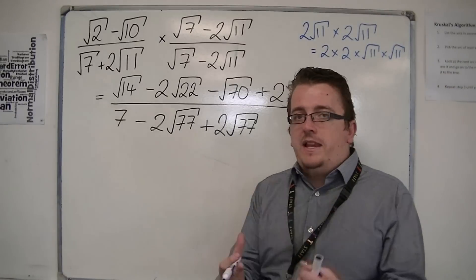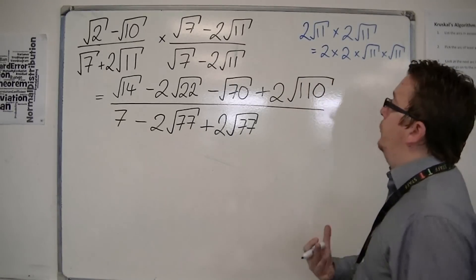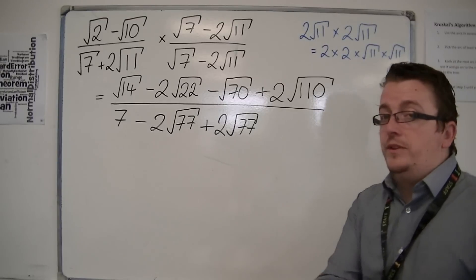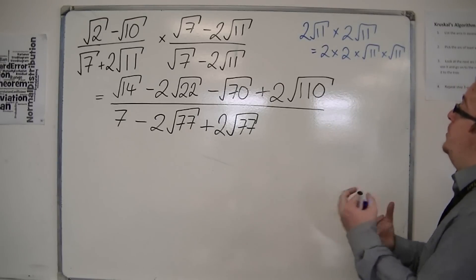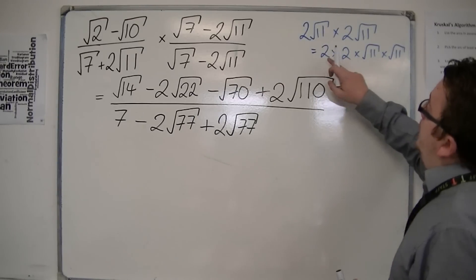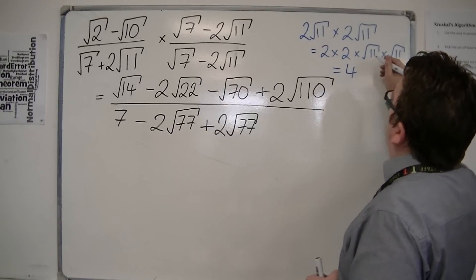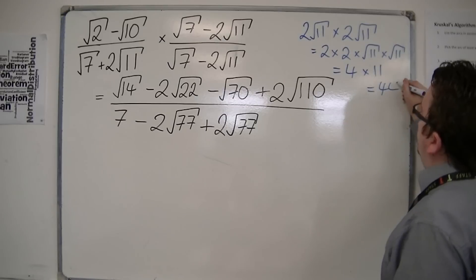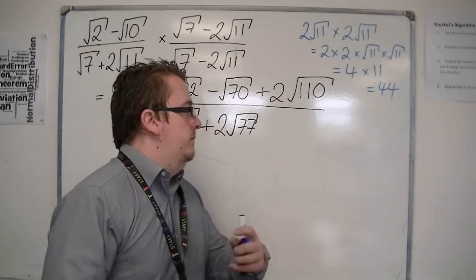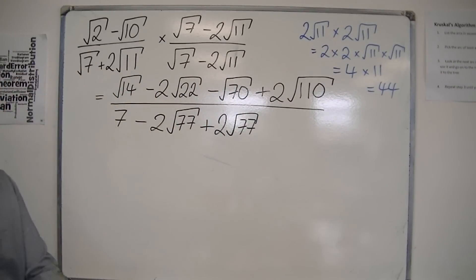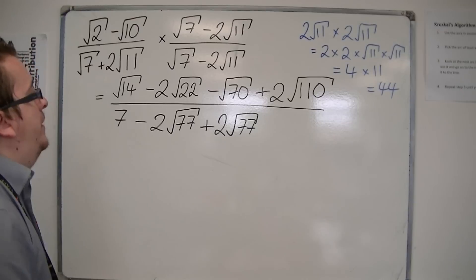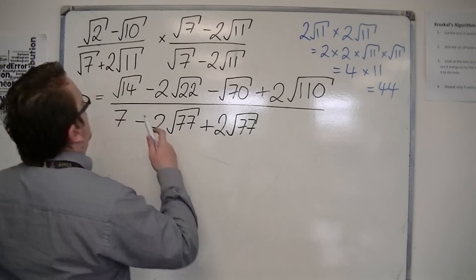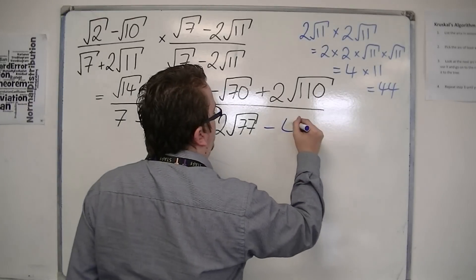So you're perfectly at liberty to reorder the multipliers, because 2 times 3 is the same as 3 times 2. It doesn't matter which order you do them. So we've got 2 times 2 is 4, and root 11 times root 11 is 11. So this is 44. So that's how to easily do it without the calculator. Just reorder the things and make it simpler for itself. So what we have here is a positive times negative, so this is minus 44.